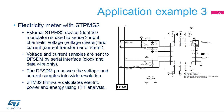The DFSDM processes the voltage and current channel 1-bit data streams into output data with higher resolution and slower data rate. Finally, firmware uses FFT analysis to calculate electric power and energy from the current and voltage samples.